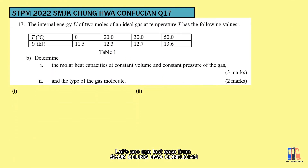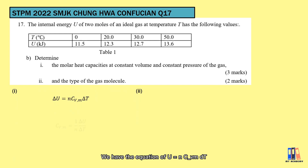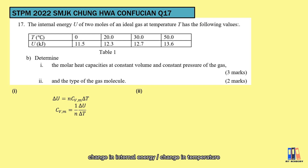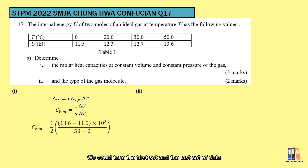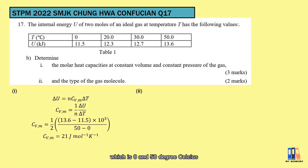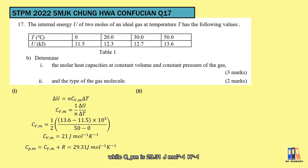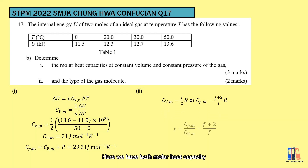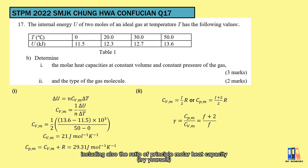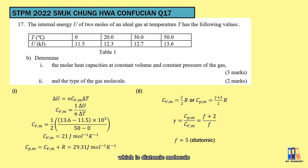Let's see one last case from SMJK Chonghua. We are given data of internal energy at different temperatures. Using delta U = nC_VM ΔT, we calculate C_VM = (1/n) × (ΔU/ΔT). Taking the first and last data sets (0°C and 50°C) to obtain the average C_VM, we get C_VM = 21 J per mole per Kelvin, and C_PM = 29.31 J per mole per Kelvin. To determine the type of molecule, we apply the molar heat capacity formulas or the gamma ratio. The degree of freedom is 5, which corresponds to a diatomic molecule.